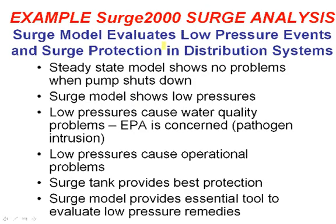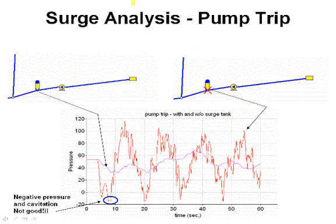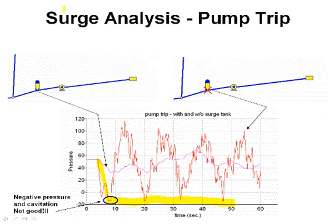A surge analysis: we saw earlier that if we shut the pumps off, the system behaves very well. But what happens if the pump trips — it loses power and you get a very fast shutdown? You can analyze this with no surge tank, which is the way the system would be. You get significant pressure variations and negative pressures, which is a very bad situation for water utilities. Negative pressures break seals and cause dirty water intrusion into the system.